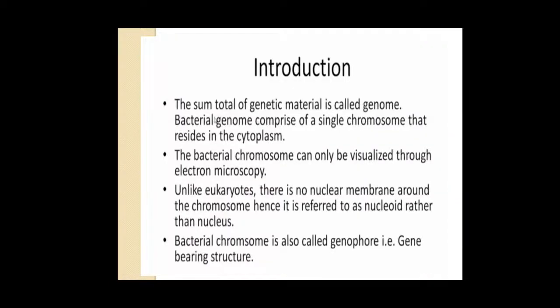Now the bacterial chromosome in detail. The sum total of genetic material is called the bacterial genome. It comprises a single chromosome that resides in the cytoplasm. The bacterial chromosome can only be visualized through electron microscopy. Unlike eukaryotes, there is no nuclear membrane around the chromosome, hence it is referred to as a nucleoid rather than nucleus. The bacterial chromosome is also called a genophore — that is a gene-bearing structure; 'geno' means gene and 'phore' means bearing.